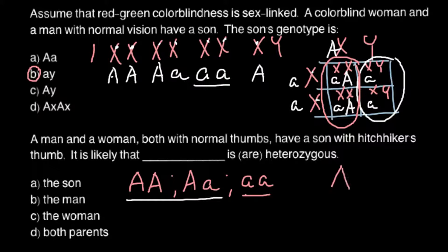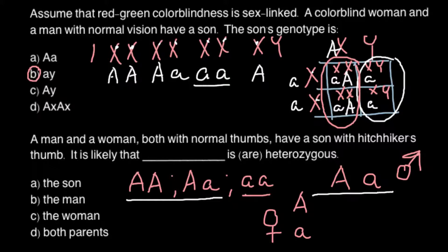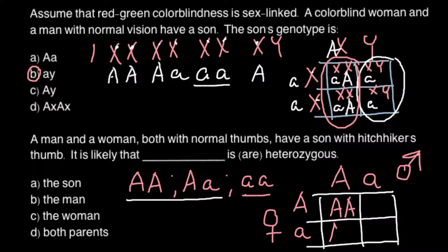How can we get a homozygous recessive child if two persons — male and female — don't show this trait? This is only possible when both of them are heterozygous. We build a Punnett square with the heterozygous genotype for both parents. The result is: capital A capital A, capital A small a, capital A small a, and small a small a. Three out of four offspring would have a normal phenotype, and one out of four would have hitchhiker's thumb. That means both parents should be heterozygous.